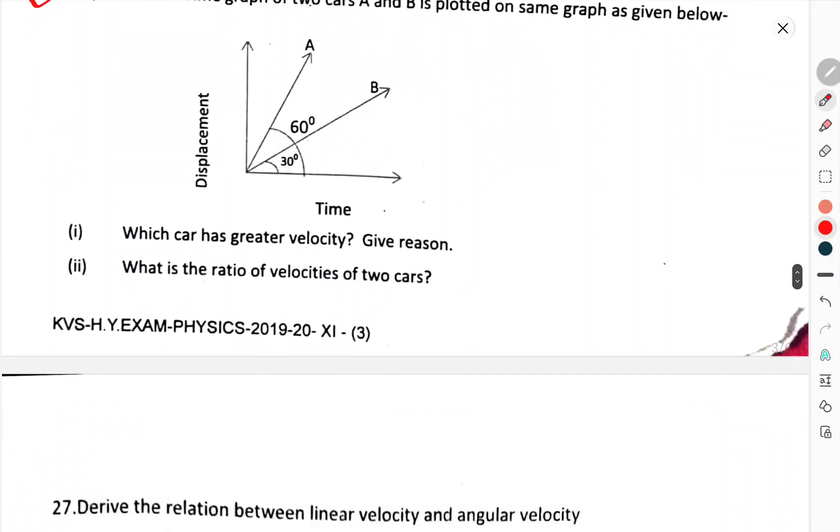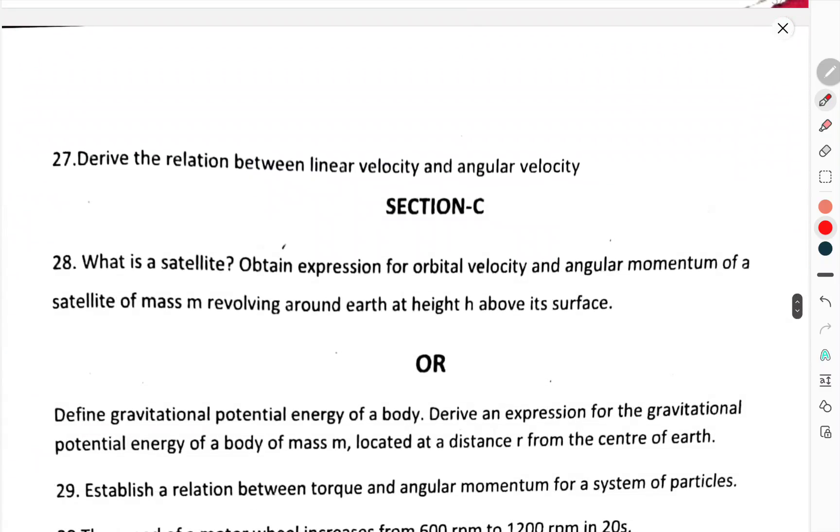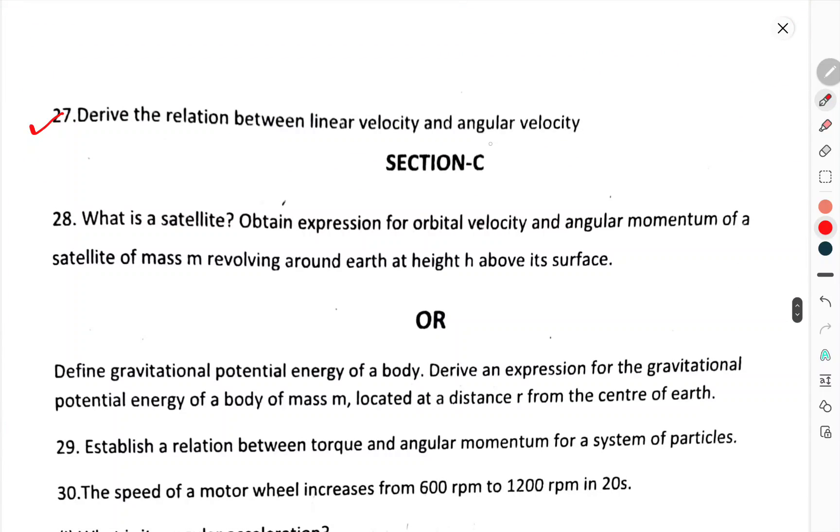F is equal to A plus T square upon B cube, where F is the force and T is the time. Question number 26. Displacement time graph with two cars A and B plotted on the same graph as shown below. Which car has greater velocity? Give reason. What is the ratio of the velocity of two cars? Question number 27. Derive the expression between the linear velocity and angular velocity. Now we have come to section C.